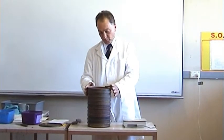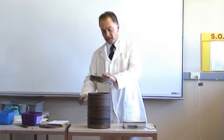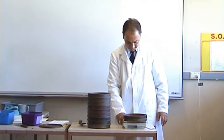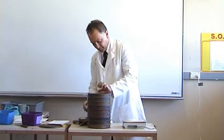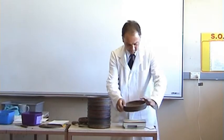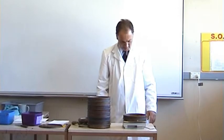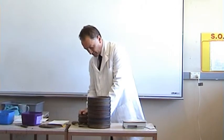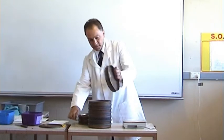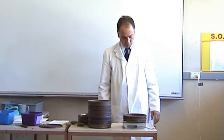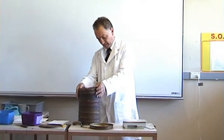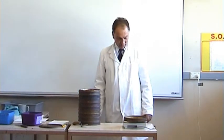Once the sieves are cleaned, they are stacked back in order and their mass is found before soil is added. The first sieve, number 7, weighs 377 g; the second sieve 311 g; the next 351 g; the number 120 sieve 281 g; and the bottom pan 298 g.